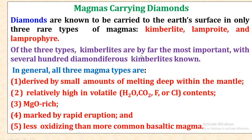Of the three types, kimberlites are by far the most important, with several hundred diamondiferous kimberlites known. All three magma types are produced by a small amount of melting deep within the mantle. They are relatively high in volatiles including H2O, CO2, chlorine, and fluorine, MgO-rich, marked by rapid eruption, and less oxidizing than more common basaltic magmas.